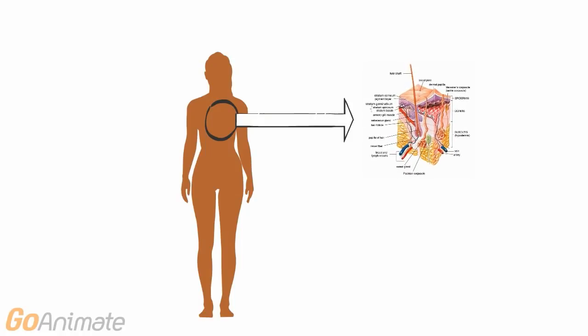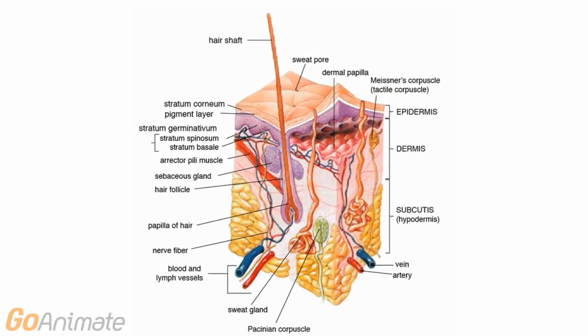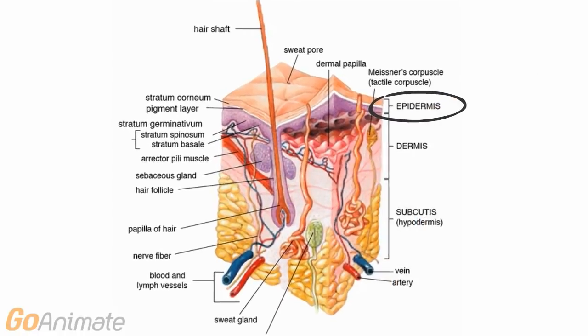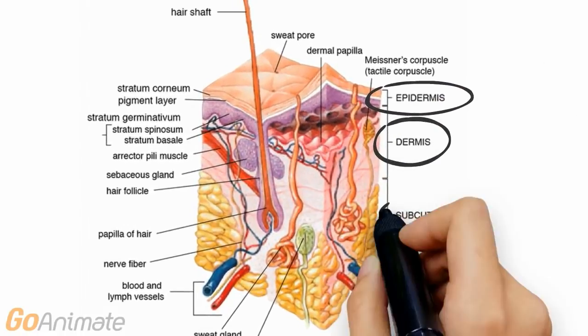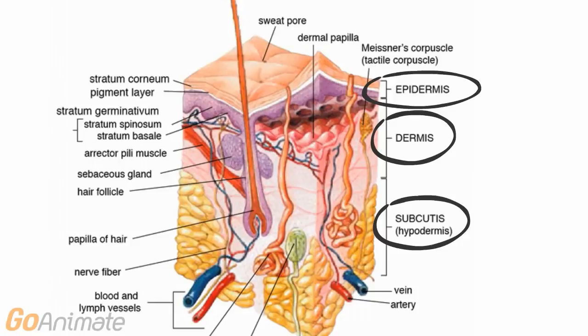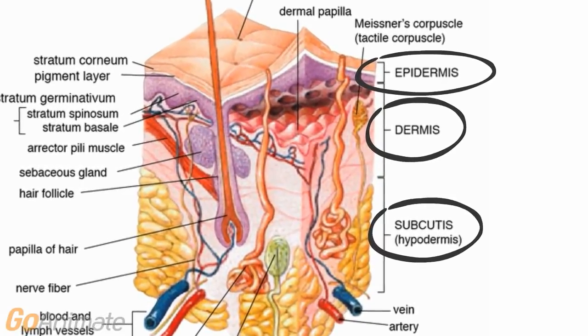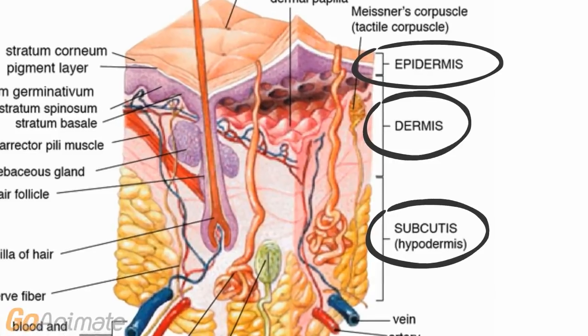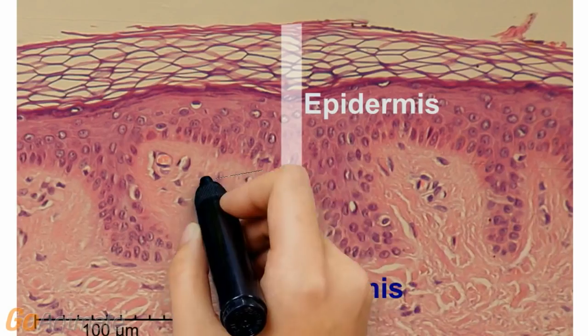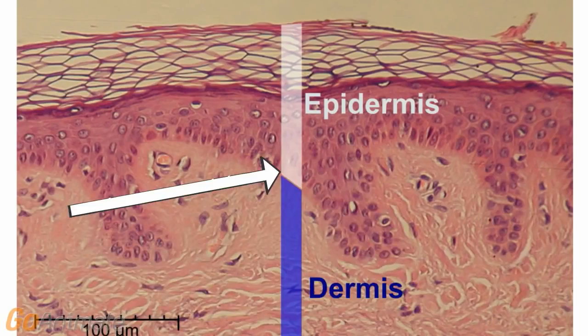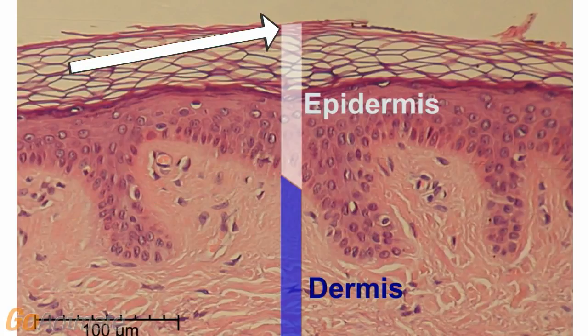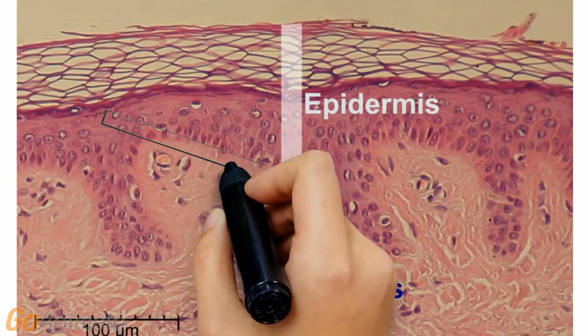Let's look at the integument or skin in more detail. The skin consists of three main layers: the epidermis, the dermis, and the hypodermis or subcutaneous layer. The epidermis consists of stratified squamous epithelium. The dermis consists of connective tissue.